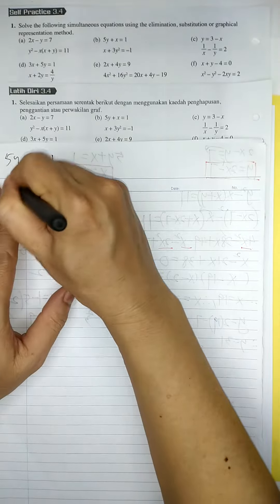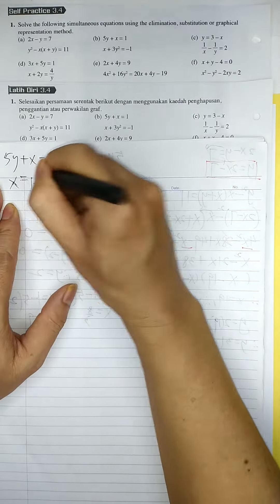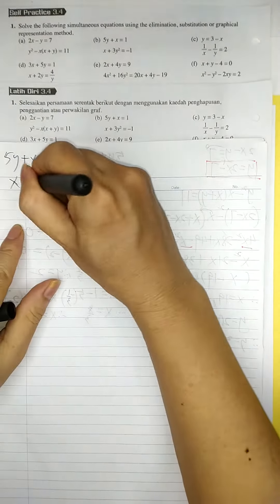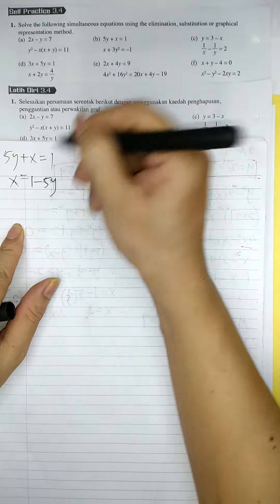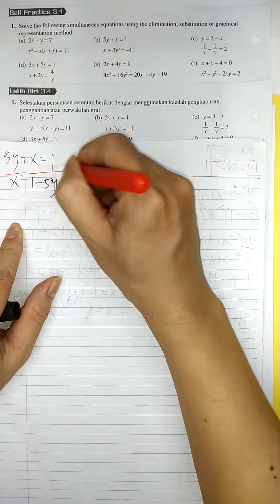Then x equal to, moving the 5y to the right-hand side, so 1 minus 5y. This is x in terms of y.